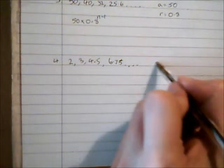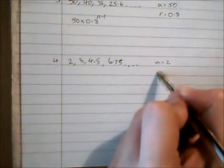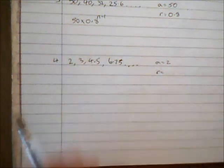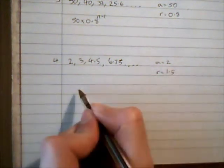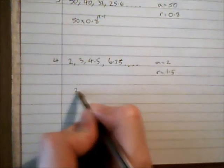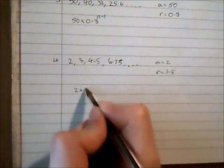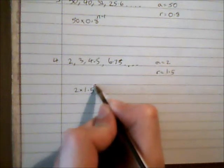And our fourth one, we've got a value of a is 2 and a value of r. So 2 multiplied by 1.5. So we've got 2 times 1.5 to the power of n minus 1.